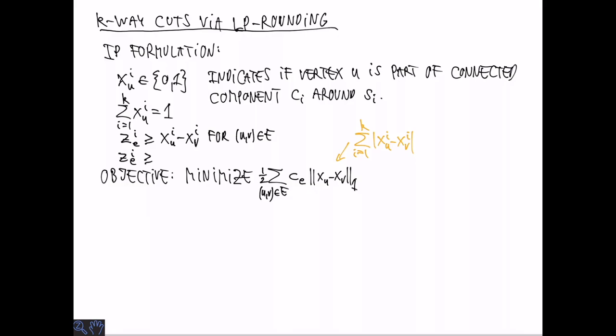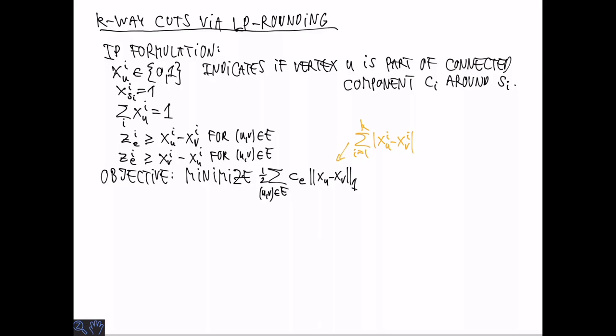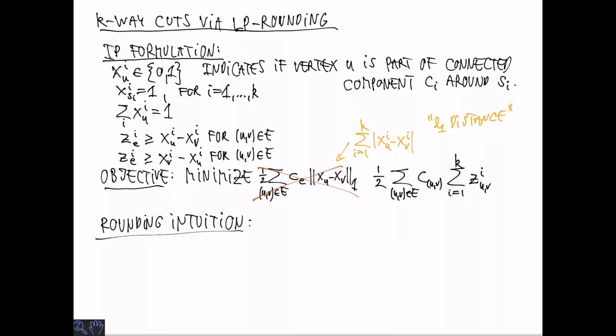In order to write this as a linear constraint, we use a trick you have also seen in the hand-ins, which is to introduce an auxiliary variable that is larger than or equal to both XUi minus XVI and minus that. This is going to have an optimal value which is the absolute value. We can simply replace the objective function by the sum over CI multiplied by this auxiliary variable set EI.